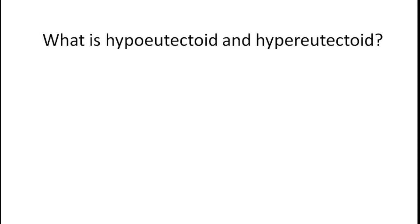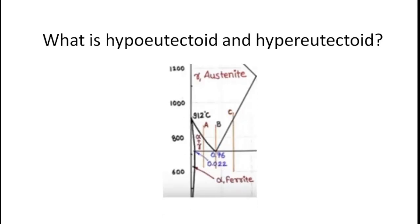If we recall the iron-iron carbide diagram, we know that there is a eutectoid point at 0.76 weight percentage carbon and 727 degrees Celsius. Here I have not shown the whole diagram but only the region defining steel. In this region, the diagram is divided into two zones.